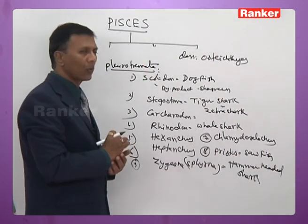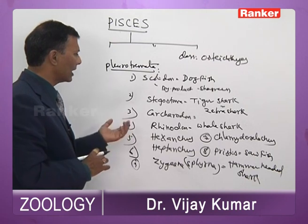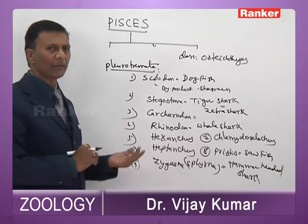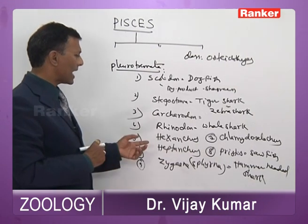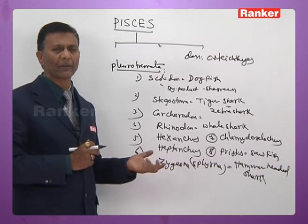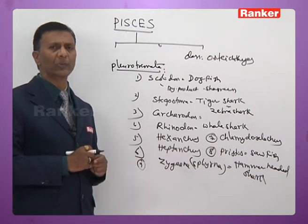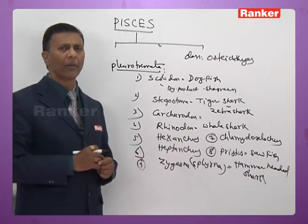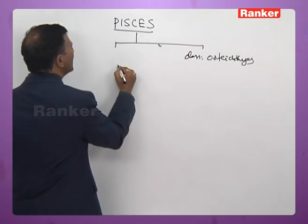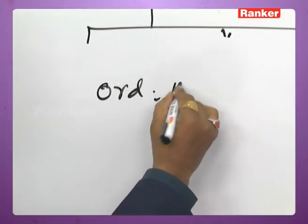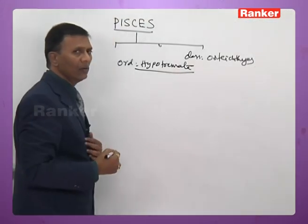To summarize Pleurotremata: Scoliodon — dogfish; Stegostoma — tiger or zebra shark; Carcharodon; Rhinodon — largest fish or whale shark; Hexanchus and Heptanchus — sharks with six and seven pairs of gills respectively; Chlamydoselachus — the only cartilage fish with operculum; Zygaena or Sphyrna — hammerhead shark; Pristis — sawfish. The Hypotremata includes rays and skates.